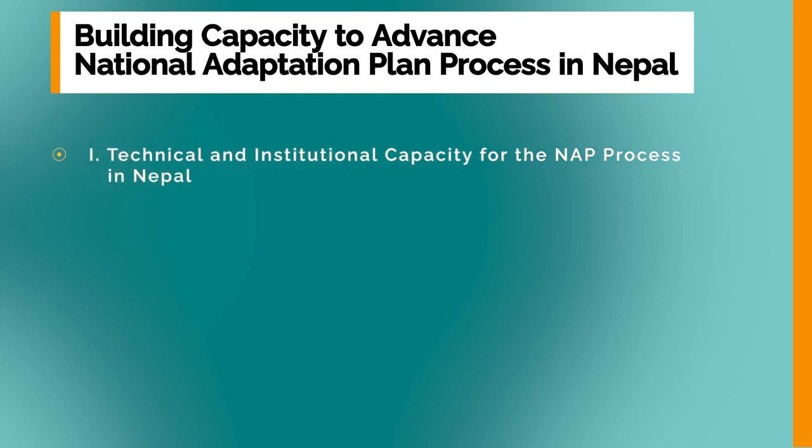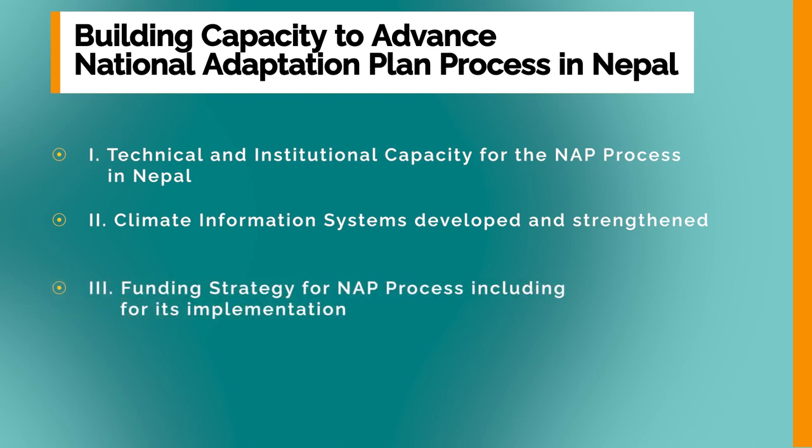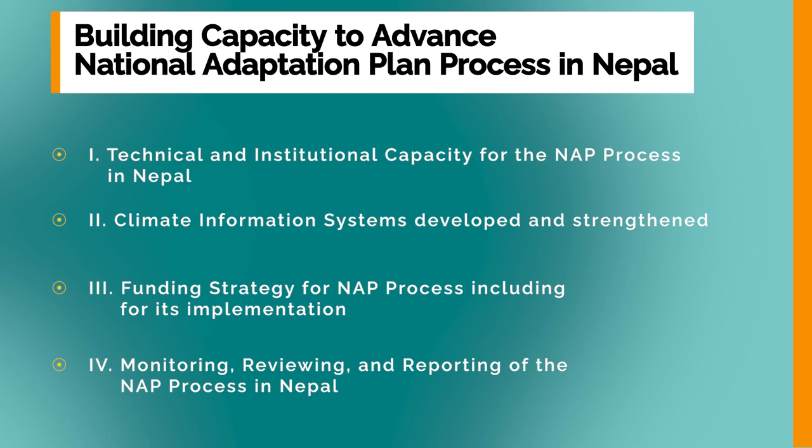The four components are: first, technical and institutional capacity for the NAP process in Nepal; second, climate information systems developed and strengthened; third, funding strategy for the NAP process including for its implementation; and fourth, monitoring, reviewing, and reporting of the NAP process in Nepal. As one of the measurable outcomes of this project, Nepal successfully endorsed its NAP document in October 2021, right before the COP26 conference.